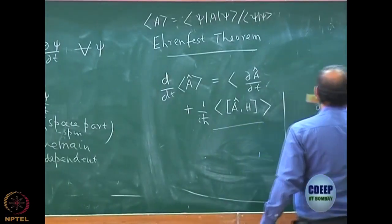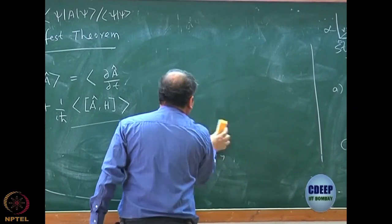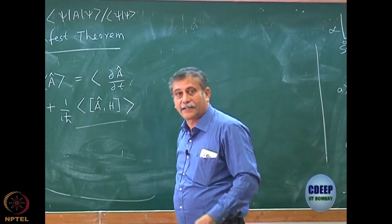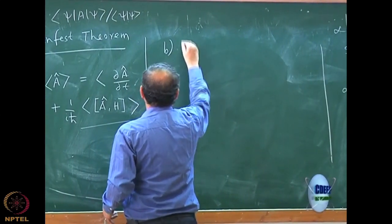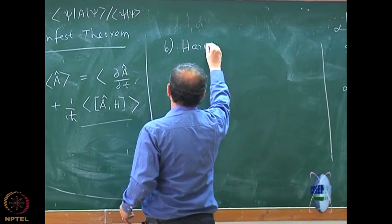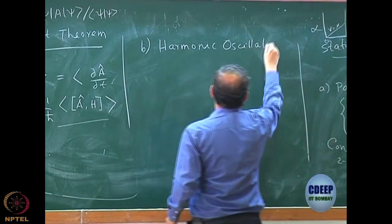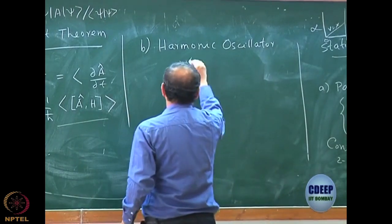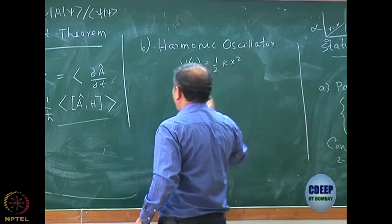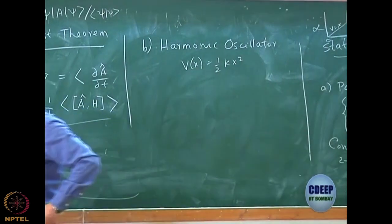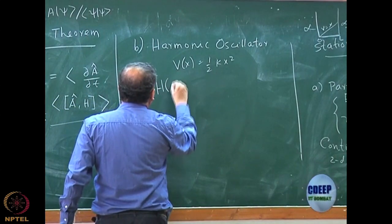Among the stationary states, particle in a box was discussed very elaborately — it is a very famous problem. The second was the simple harmonic oscillator, where the potential was half kx squared. Before solving the problem, we noted that the Hamiltonian itself is even.